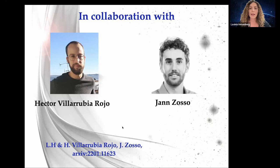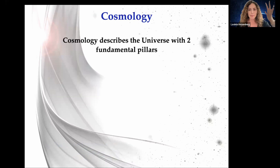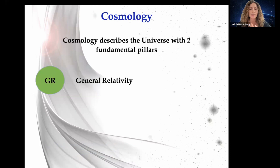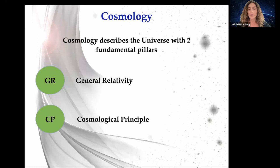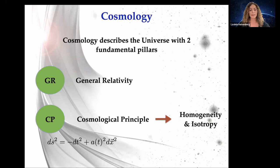In cosmology we describe the entire universe using two fundamental pillars. The first is the assumption about general relativity and the second is the cosmological principle — the assumption that the universe on cosmological scales is homogeneous and isotropic. This has immense implications for the metric, which simplifies enormously to this very simple form.